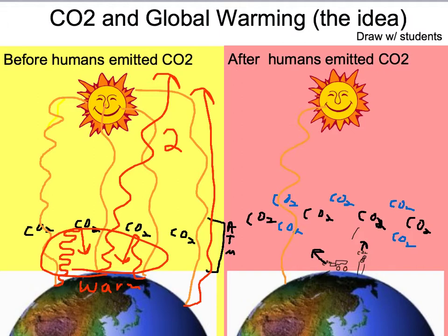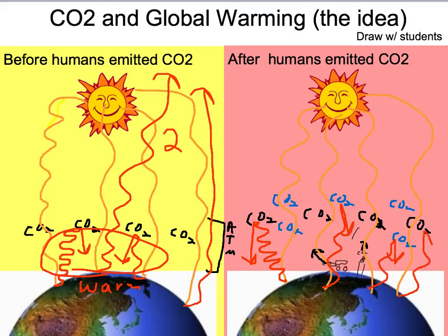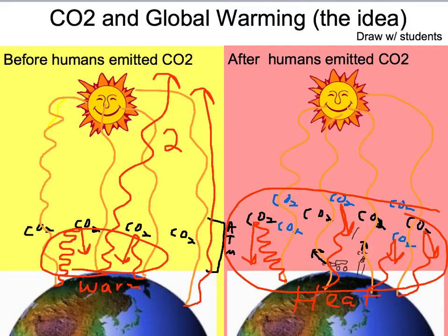Just like before, sunlight comes in and goes through the CO₂ pretty easily — four rays coming in. But then as it goes back out as infrared, there's now more of a chance of being trapped because there's more CO₂. In reality not all four will be trapped, but more would be trapped. So you're trapping more energy in our atmosphere, which causes an increase in heat on our planet — or at least that's the idea.